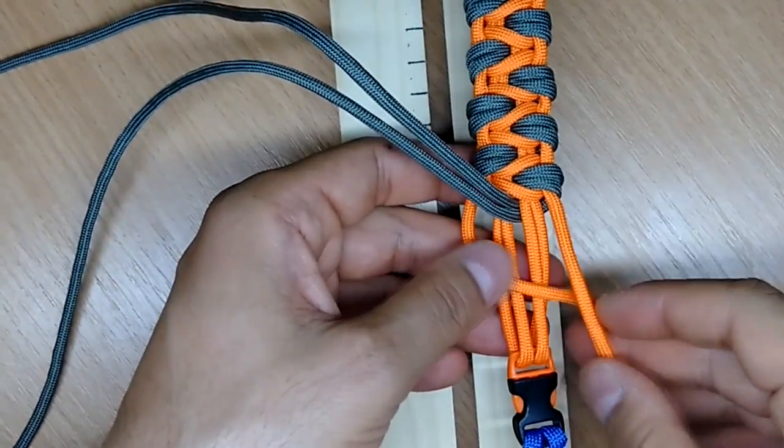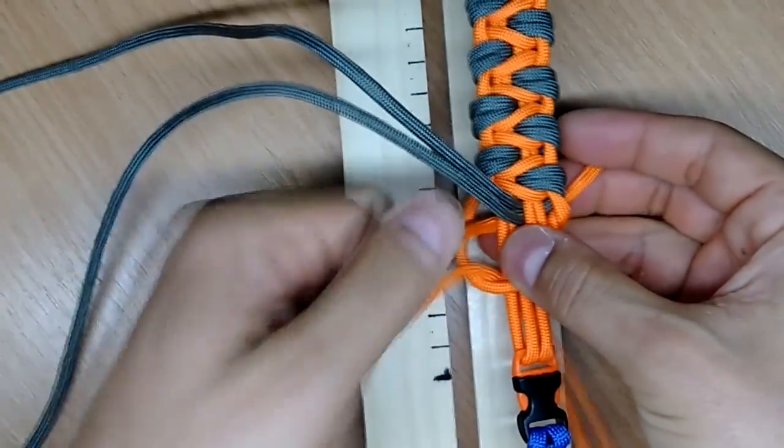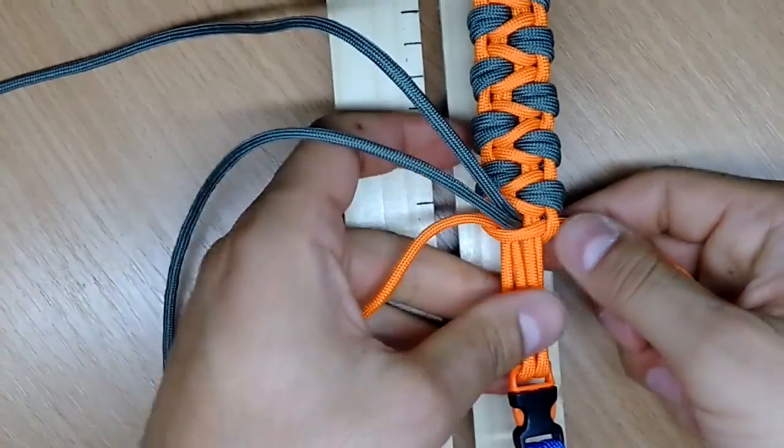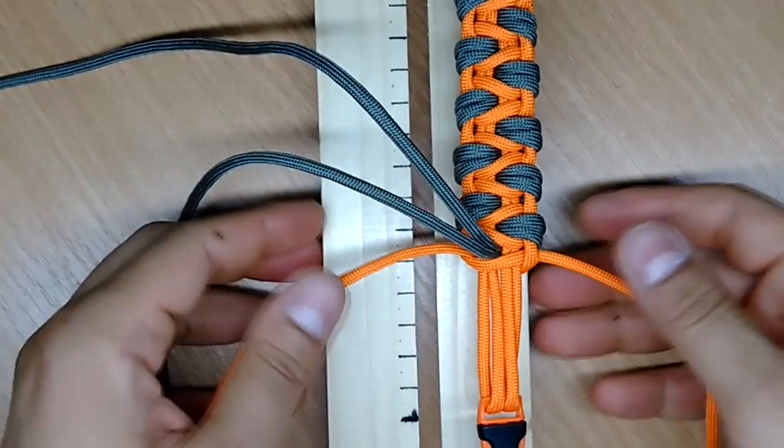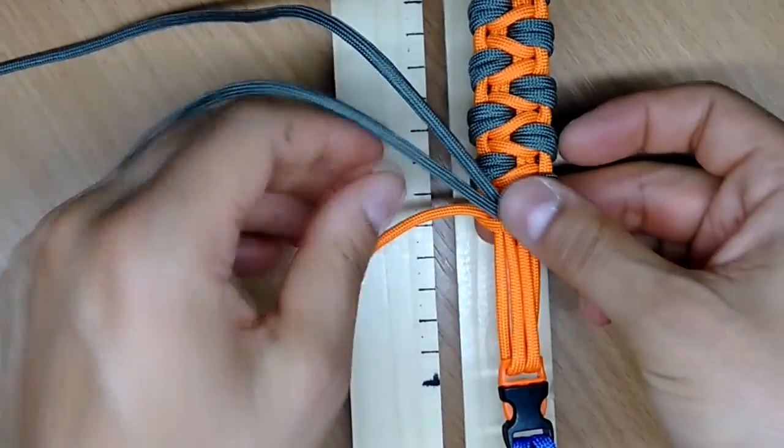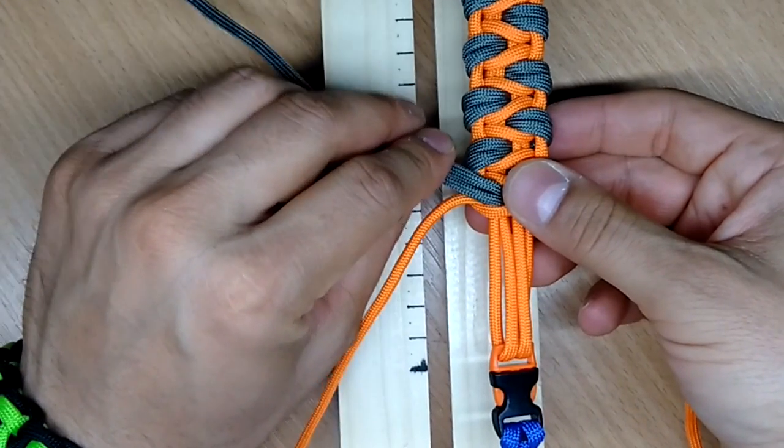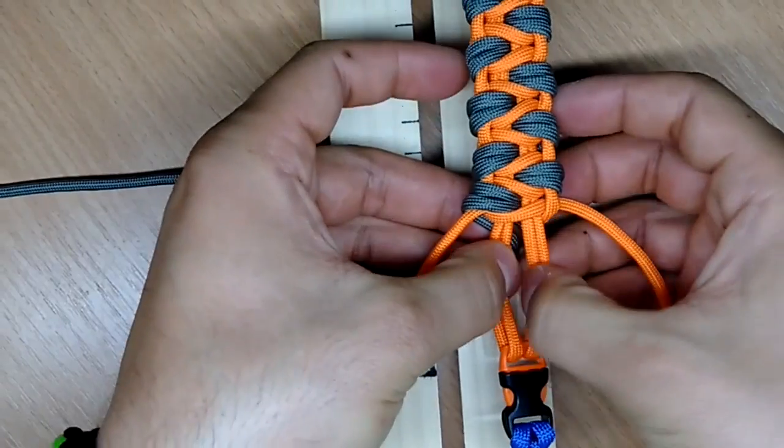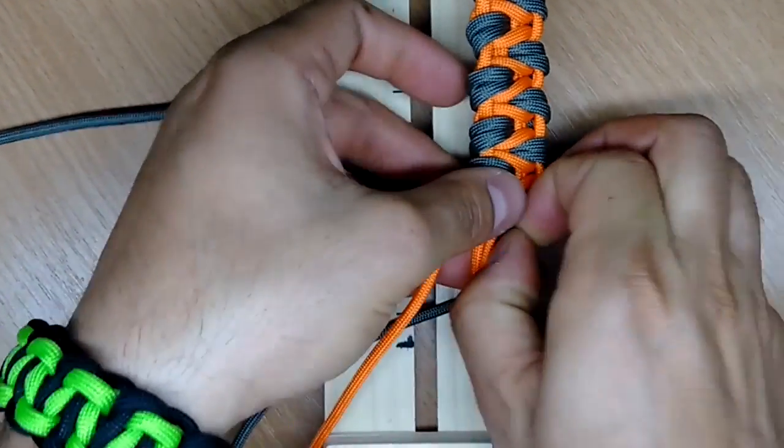When you pull the gray paracord through the middle of the bracelet, you're gonna do the simple cobra knot. Now take the gray paracord, take it under and through the middle of the bracelet like this.